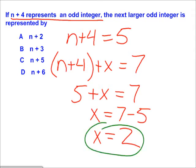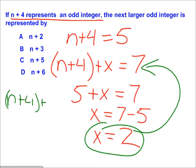Now, substitute 2 in for x in the original equation. Therefore, n+6 equals 7.